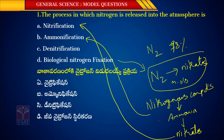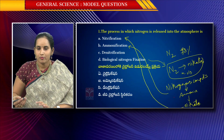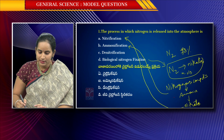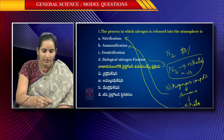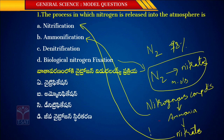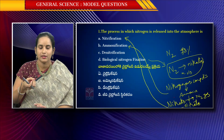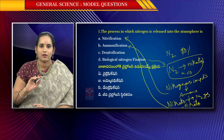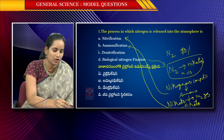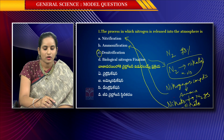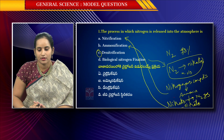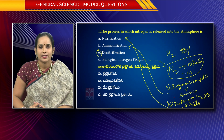Whatever nitrates the plants utilize — overall, through denitrification, whatever nitrates have been produced, the nitrogen gas converts and goes back to the atmosphere. So, the process in which nitrogen is released into the atmosphere is known as denitrification.